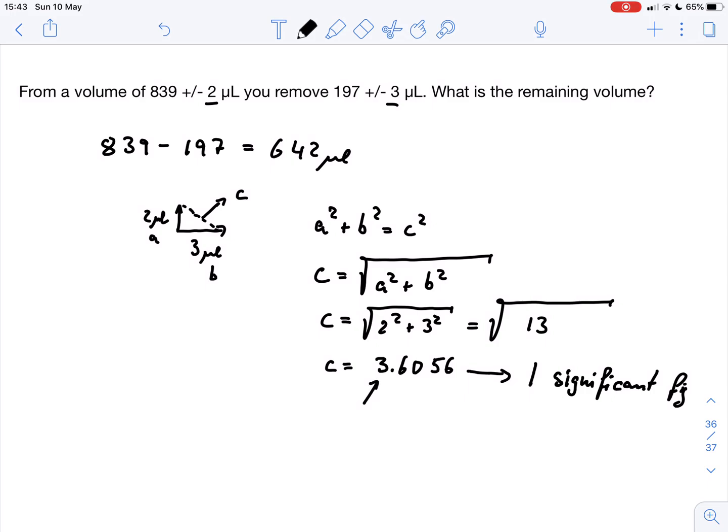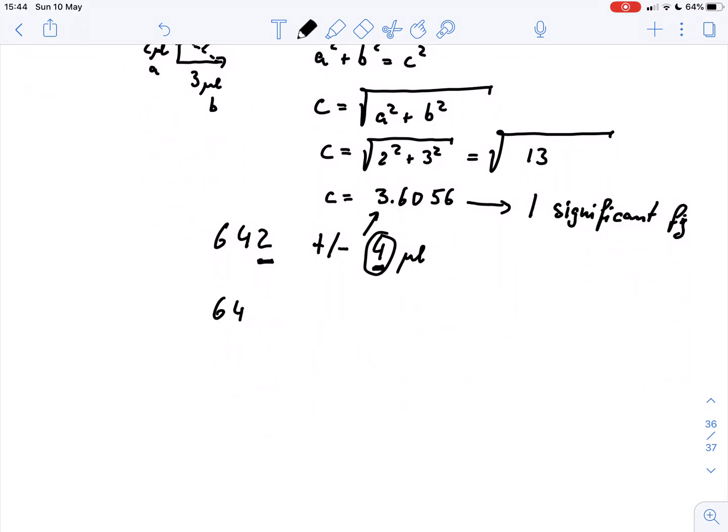Because we've got 3.6, we would round that up to 4. So we report our result as plus or minus 4 microliter. Now this uncertainty here is the unit position of the number, and therefore we need to have the same position in our result. So we would report this as 642 plus minus 4 microliter. This position here dictates the last position in our result. So the correct reporting would be 642 plus or minus 4 microliter.